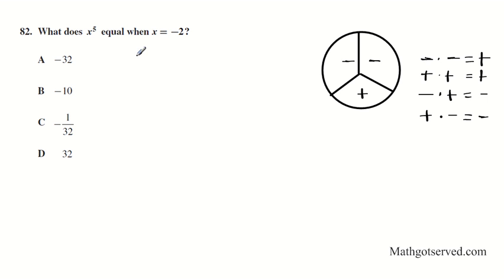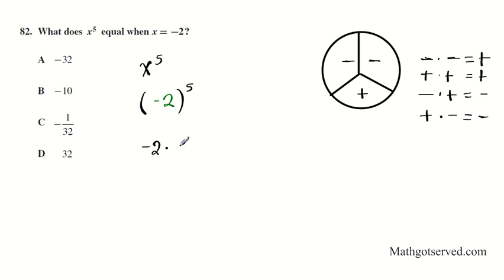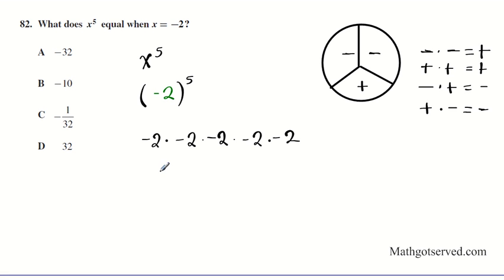Let's do that for this problem. We have x to the fifth when x is equal to negative two. We're going to substitute negative two for x. So we have negative two raised to the fifth power. Think about exponents as copies — a product of five copies of negative two: negative two times negative two times negative two times negative two times negative two. So we have five twos. Let's multiply them together two at a time.